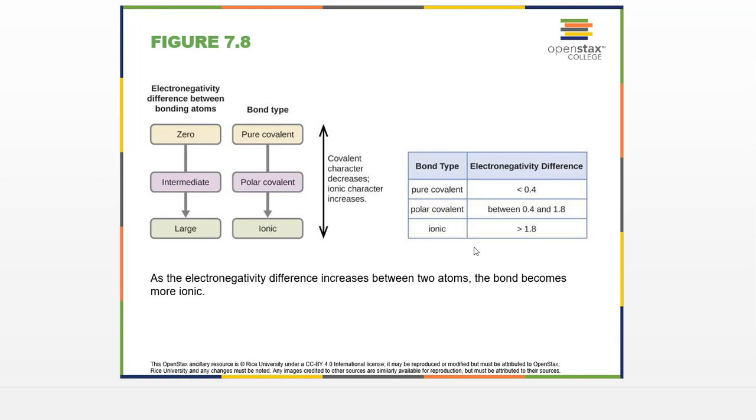In the next section, we want to actually look at some Lewis structures, a little bit for ionic compounds, and then we're going to spend the best part of an hour looking at Lewis structures for covalent compounds. Lewis structures are very important and something that you absolutely need to practice for this course.